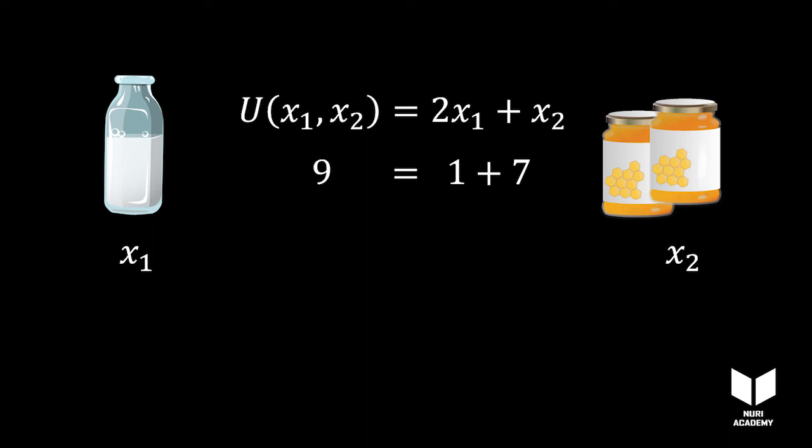One ounce of milk and seven ounces of honey is as good as two ounces of milk and five ounces of honey, or three ounces of milk and three ounces of honey. This consumer clearly likes milk twice as much as she likes honey.